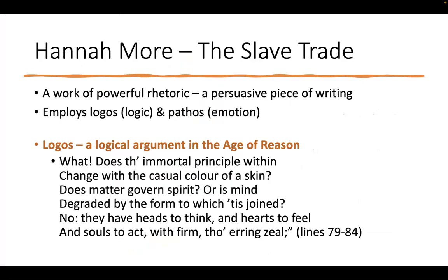We also have Hannah More chiming in — another prominent poet of the period. What we're reading is actually just an excerpt from a lengthy poem called 'The Slave Trade.' It's very much a work of powerful rhetoric — the art of persuasion and making arguments. In many ways this poem is an argument. It employs logos — thinking of the Aristotelian Greek form of argumentation. You might be familiar with logos, pathos, and ethos. Logos is logic: if I employ logos in an argument, I'm trying to appeal to my reader's reasoning to convince them of something.